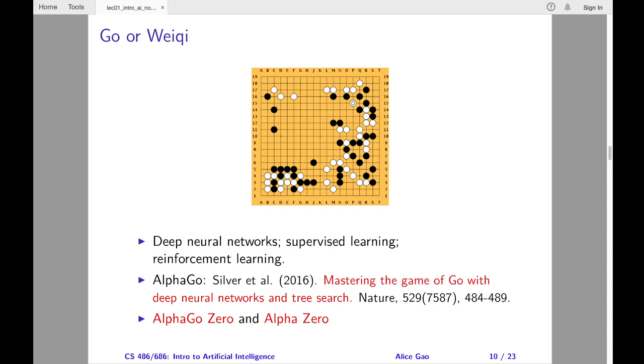Try to picture the search tree for Go, where the root is at the top, and the leaf nodes are at the bottom. Each node has around 250 child nodes, and the depth of the search tree is around 150 levels. This is an enormous search tree.